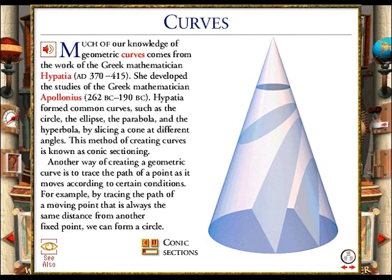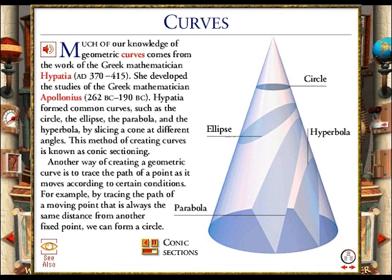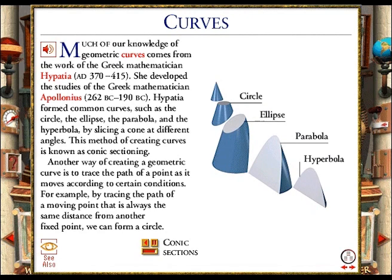Hypatia formed geometric curves by cutting slices through a cone. Using this method, she was able to form a circle, an ellipse, a parabola, and a hyperbola. This is an exploded view of the various conic sections.